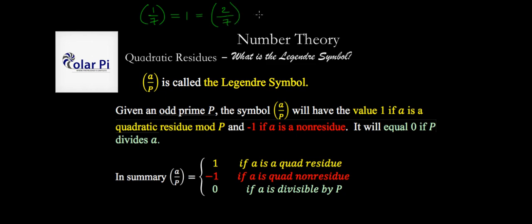Whereas, because there are quadratic non-residues, we're saying that three over seven will equal negative one because three is a quadratic non-residue mod seven. Similarly, five over seven will equal negative one, and so will six over seven. These are all quadratic non-residues.